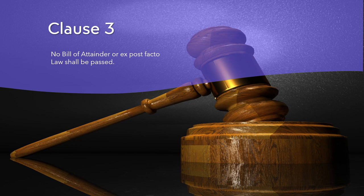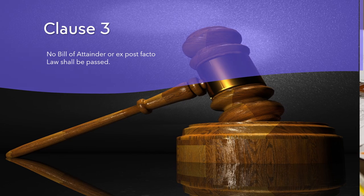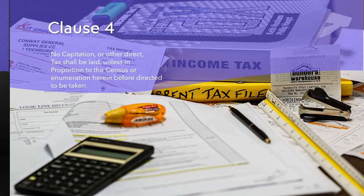Article 1, Section 9, Clause 3 is an important safeguard of liberty and justice in the US legal system, and it limits the power of Congress to legislate against specific persons or classes, ensuring that people are not punished for acts that were not illegal when they were committed.